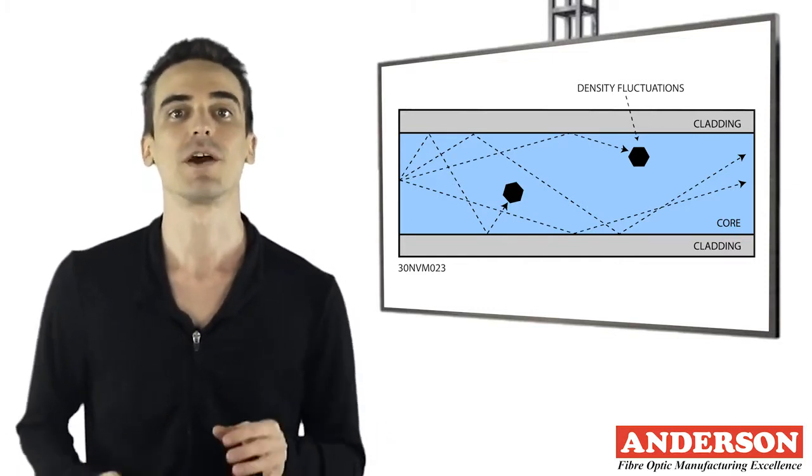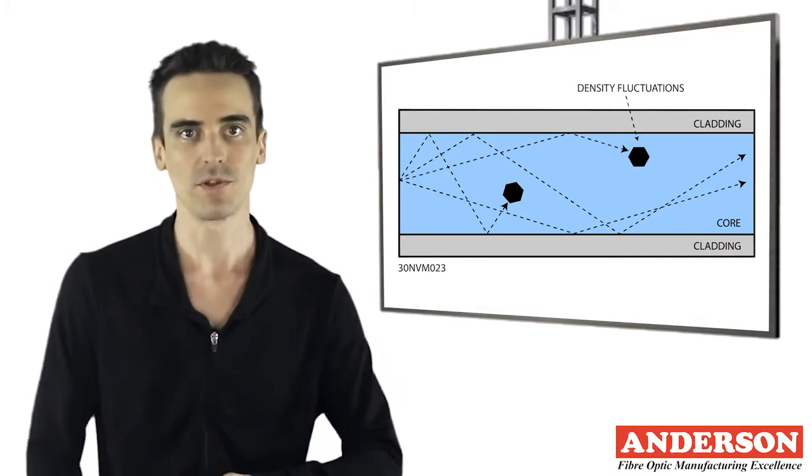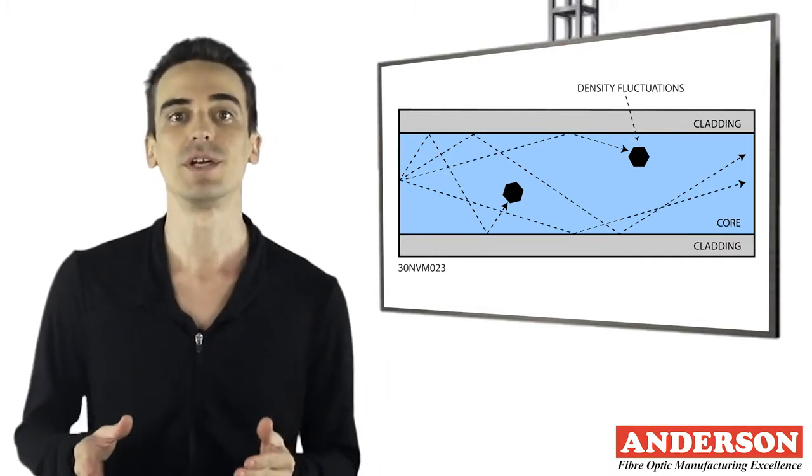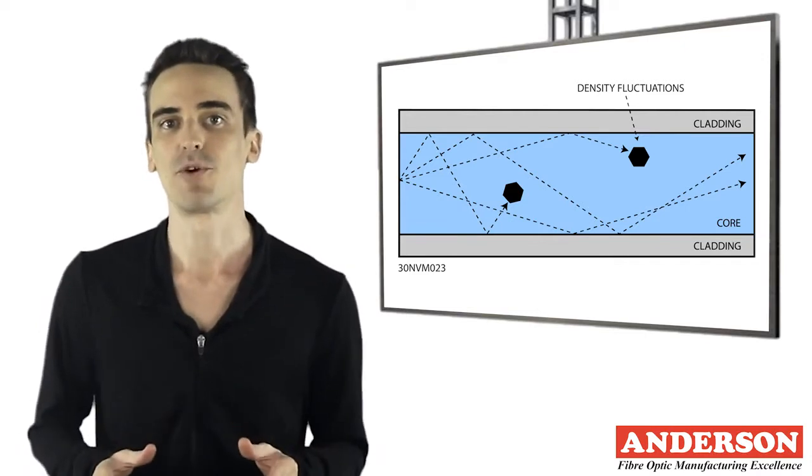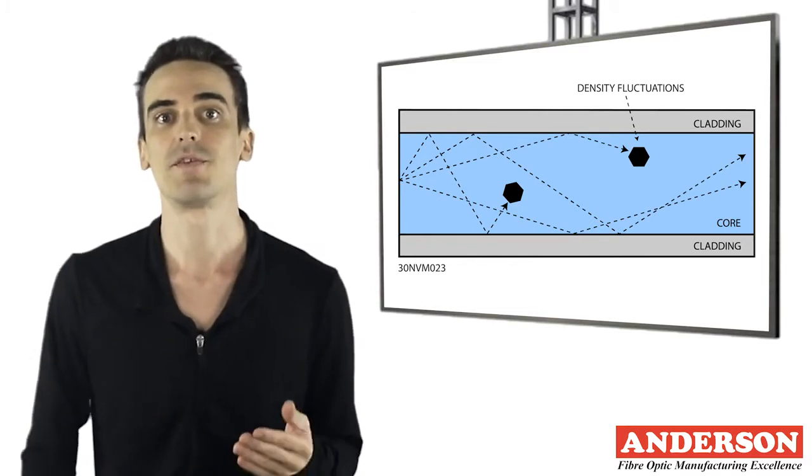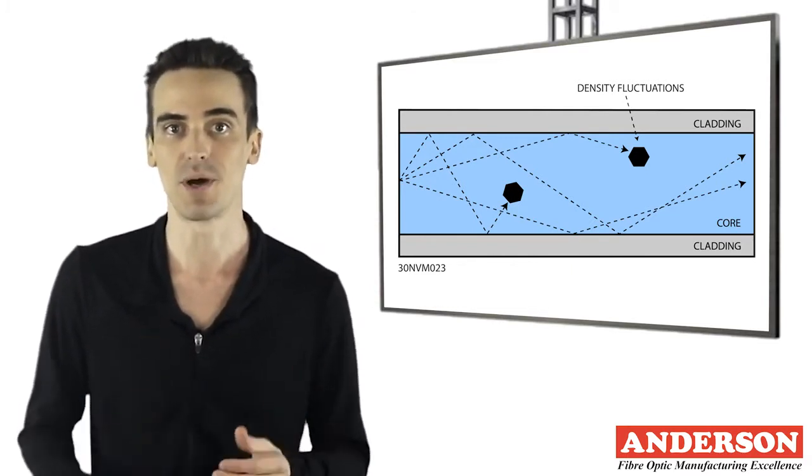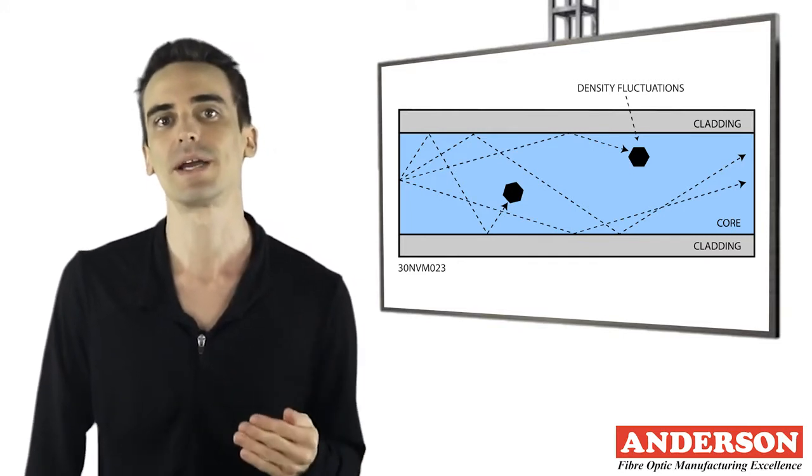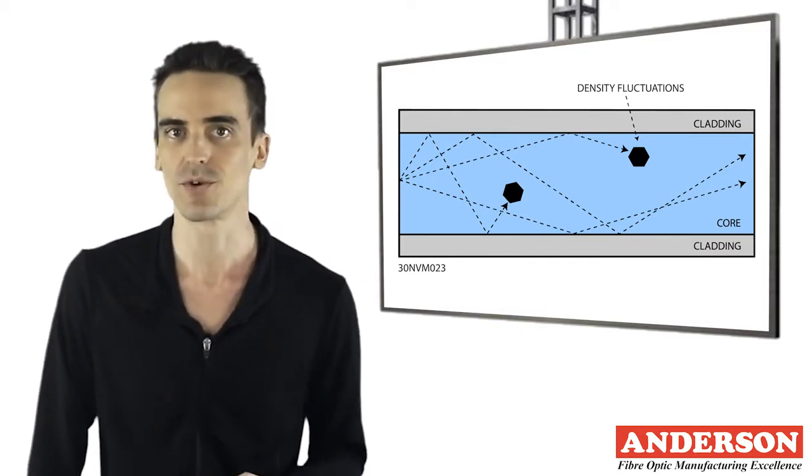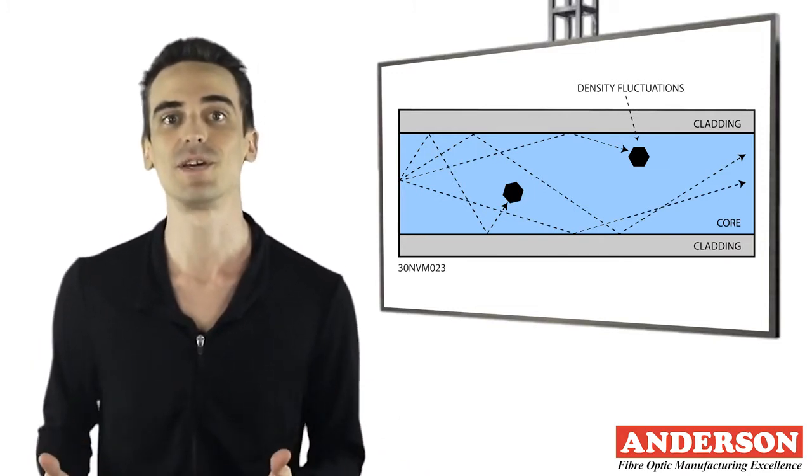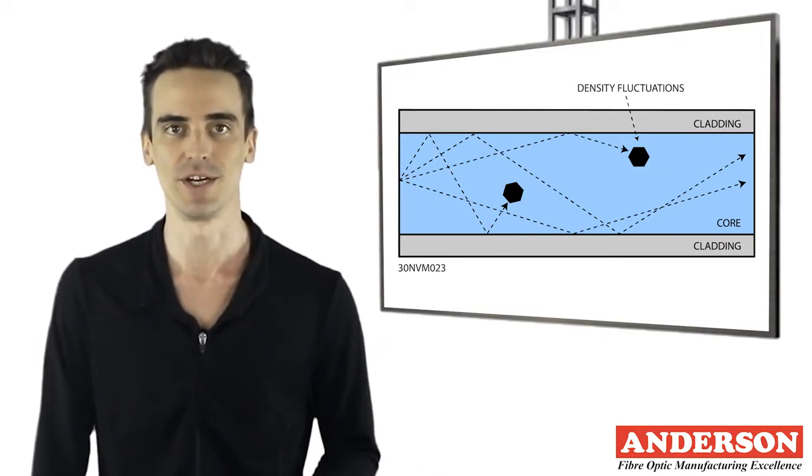Intrinsic absorption is very low compared to other forms of loss. The main cause of intrinsic absorption in the infrared region is the characteristic vibration frequency of atomic bonds. In silica glass, absorption is caused by the vibration of silicon oxygen bonds. The interaction between the vibrating bond and the electromagnetic field of the optical signal causes intrinsic absorption. Light energy is transferred from the electromagnetic field to the bond causing attenuation.